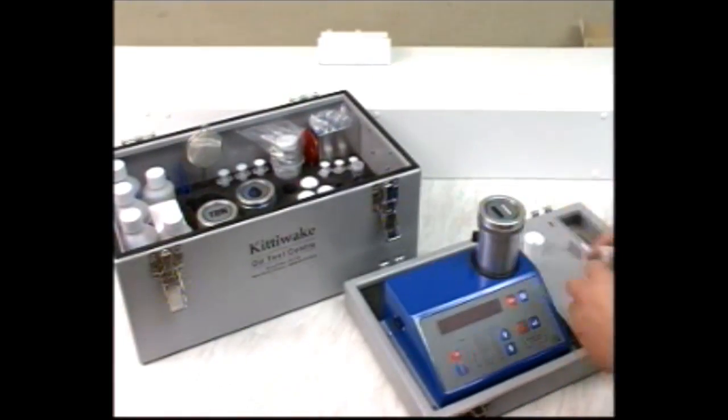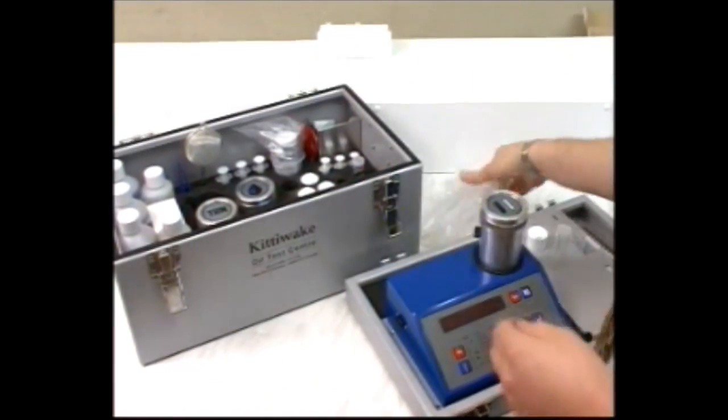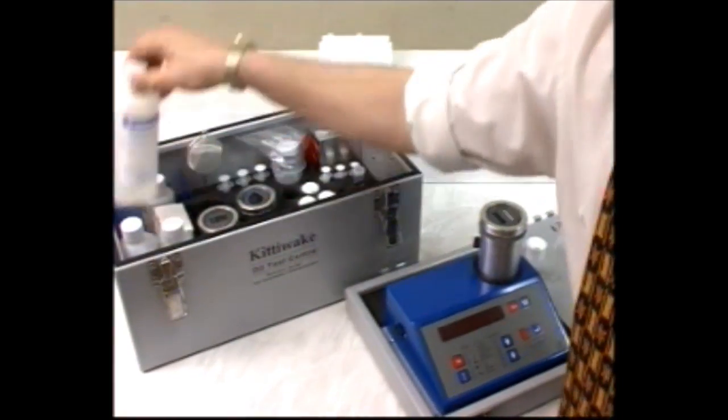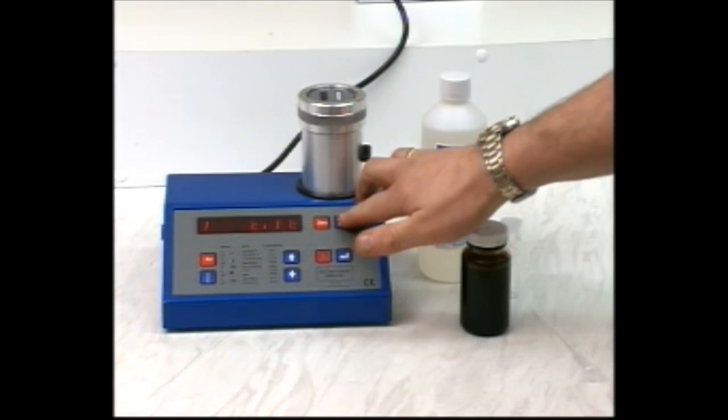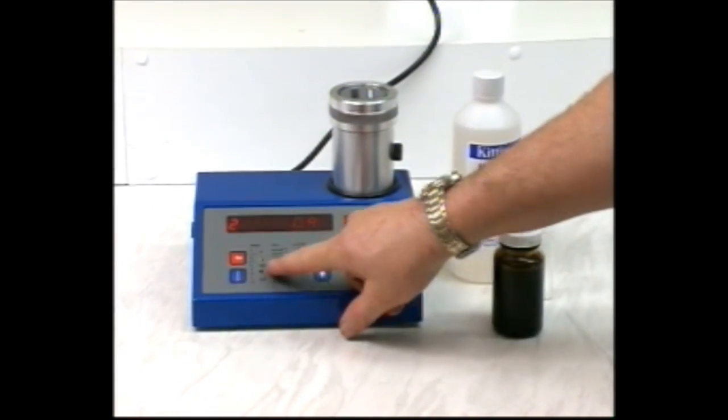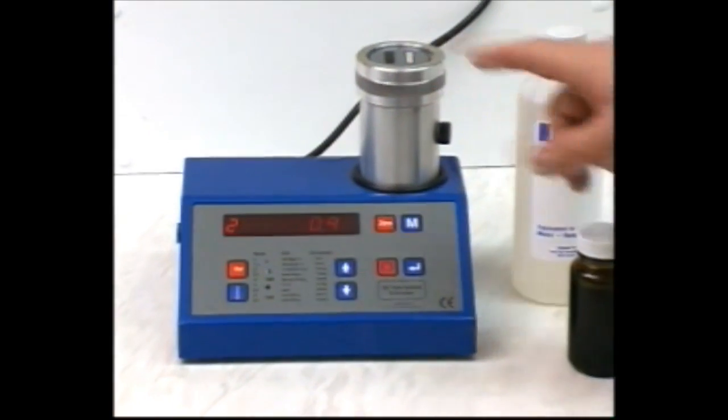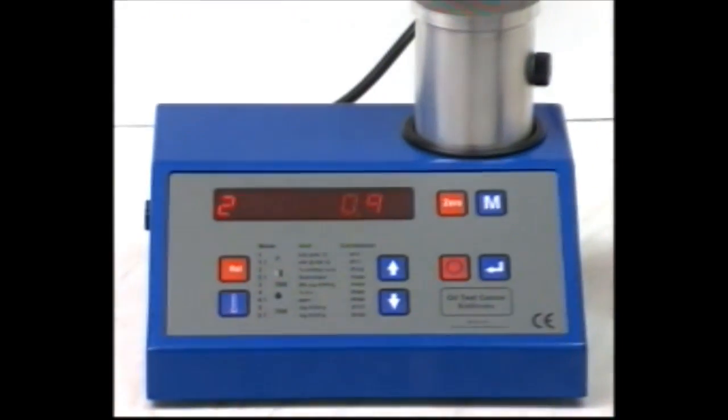This section shows you how to test for insolubles contamination in a sample. Two modes are available on the unit. Select mode 2 on the unit for percentage insolubles by IP316, or use